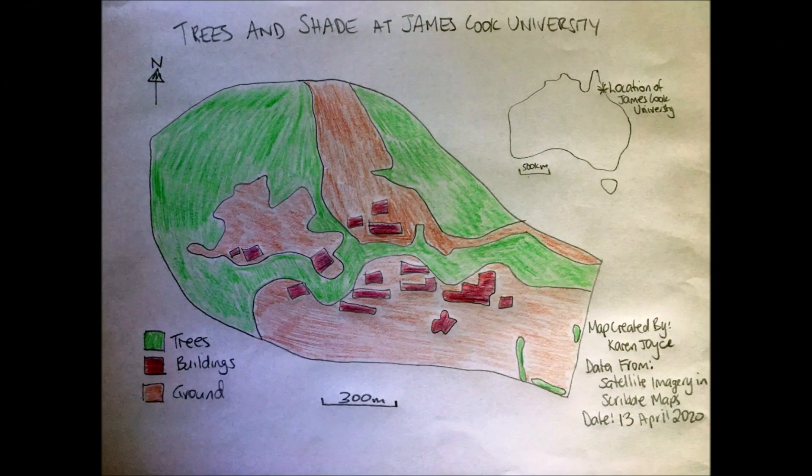Here's what my finished map looks like. I've used different colours to show trees, buildings, and ground. Remember that all good maps have a title, a north arrow, a legend, a scale bar, and information about you as the author, where the data came from, and the date you created it. I also included a small map of Australia at the top so you know exactly where my map is located.